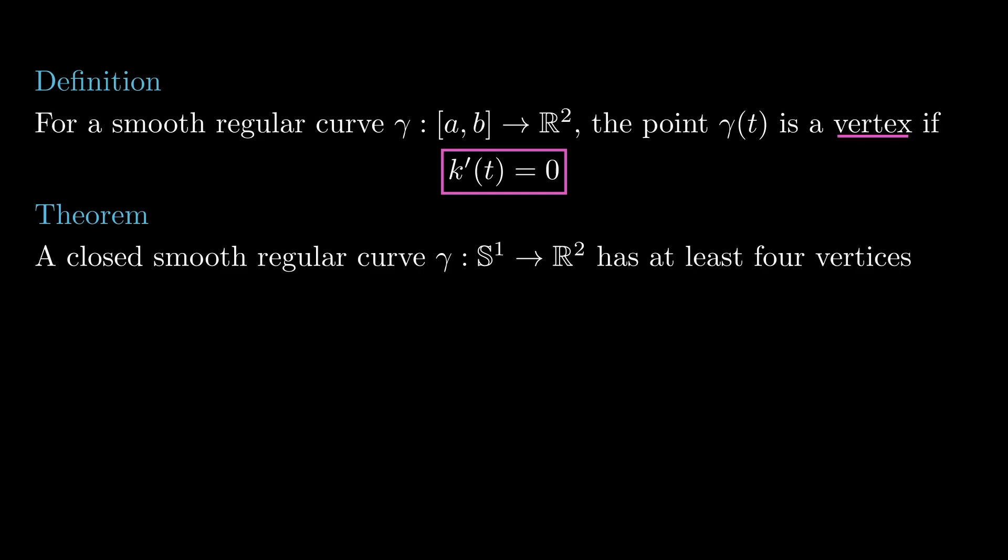Since the radius of the oscillating circle is 1 over k, the points where the radius of the oscillating circle attains a local maximum or minimum are vertices.